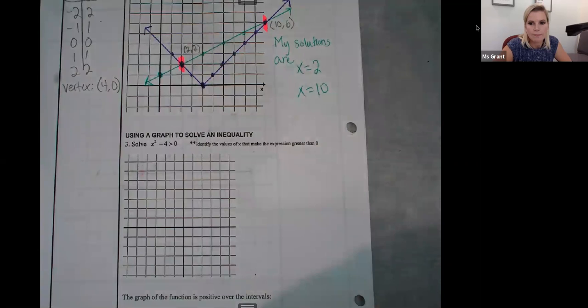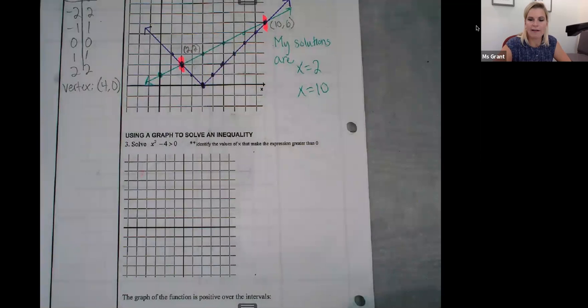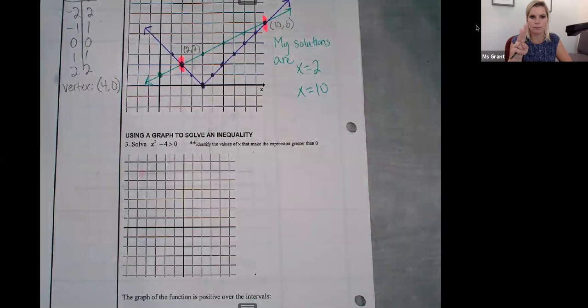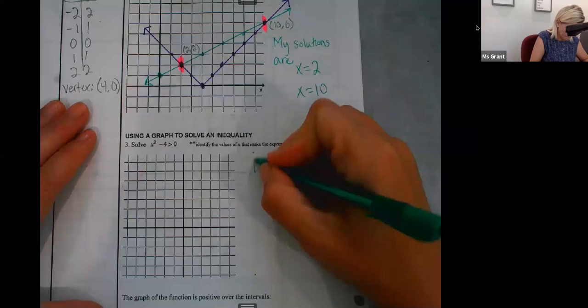Problem number three is a little different because it's an inequality and there's no equal sign. So the inequality means that I have to have my solutions greater than zero. So I am not going to draw two separate functions here. I am just going to draw one.